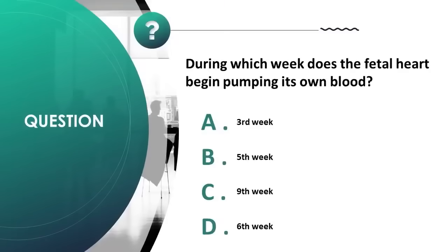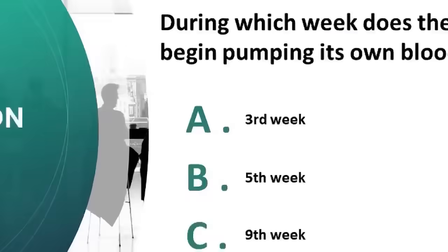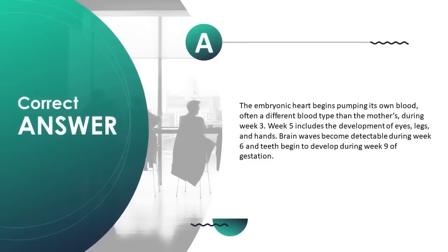During which week does the fetal heart begin pumping its own blood? A) third week, B) fifth week, C) ninth week, D) sixth week. Correct answer is A. The embryonic heart begins pumping its own blood — often a different blood type than the mother's — during week 3. Week 5 includes development of eyes, legs, and hands. Brain waves become detectable during week 6 and teeth begin to develop during week 9 of gestation.